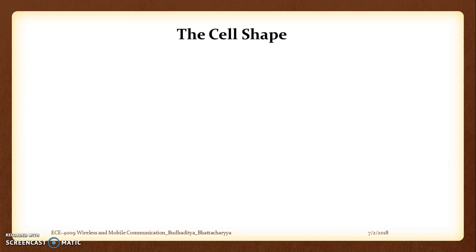We also discussed a very important aspect: what exactly is meant by a cell — in general it is the coverage region, a very small or specific coverage region under a particular base station, and whether this base station ideally should be at the center of the cell or at the edges. We also discussed how the traffic channel works, how the forward and reverse control channels work. Please go back to the earlier videos on this channel if you wish to review that.